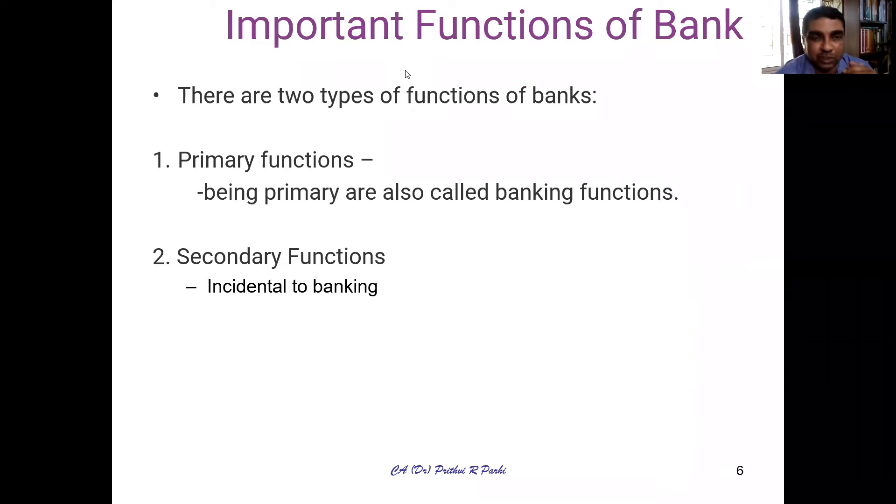We'll classify these functions into two categories: one is primary functions and the second is secondary functions. The main functions of any banking institution, as all of you know, are accepting deposits and giving loans. You can classify these two broad categories of functions as primary functions — that is, accepting deposits and providing loans and advances. Then there are also many incidental or secondary functions.